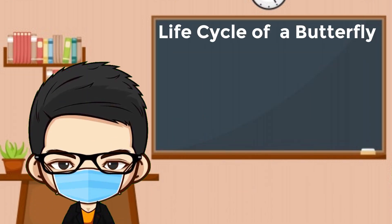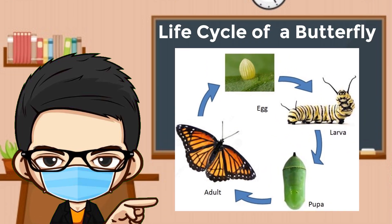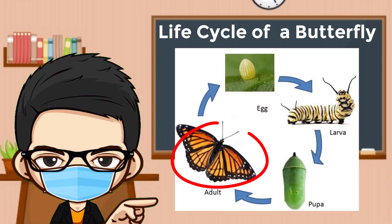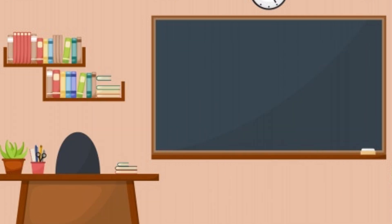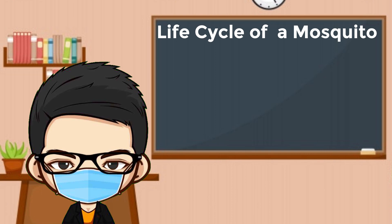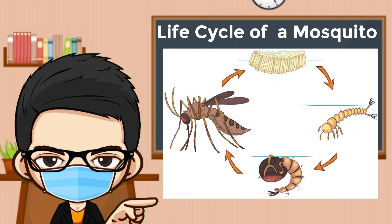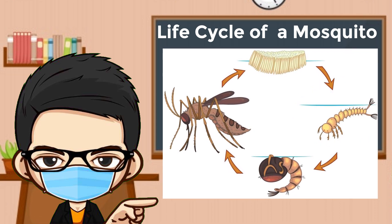Next, the life cycle of a butterfly is made up of four stages: it starts with an egg, then a caterpillar, then a pupa, then an adult butterfly. The life cycle of a mosquito is also made up of four stages: it starts with an egg, then a larva, then a pupa, then an adult mosquito.